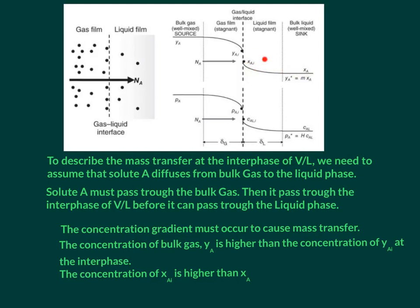We have a concentration gradient between the concentration of XAI and concentration of XA in liquid form. So we have higher concentration of XAI at the interface and lower concentration of XA at the bulk liquid. Mass transfer occurs at the interface into the liquid.